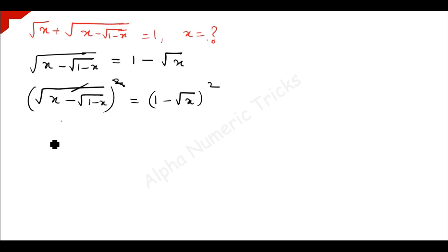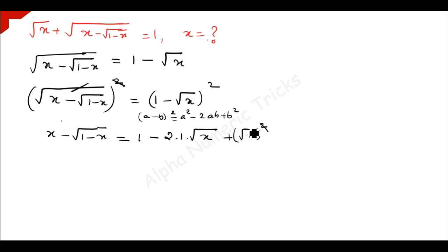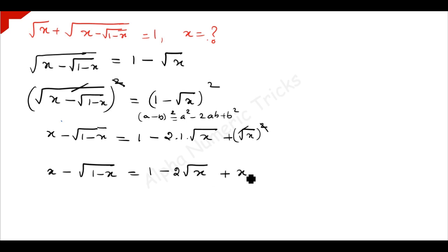This square root and square get cancelled. So we have x minus square root of 1 minus x is equal to — we apply the (a minus b)² formula: a² minus 2ab plus b². Here a is 1, so 1 squared minus 2 times 1 times square root of x, plus square root of x whole squared. The square root and square cancel, giving us x minus square root of 1 minus x is equal to 1 minus 2 times square root of x plus x. The positive x terms cancel.